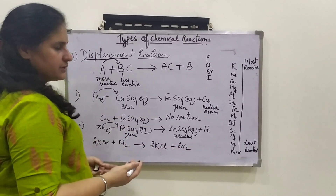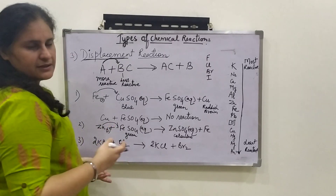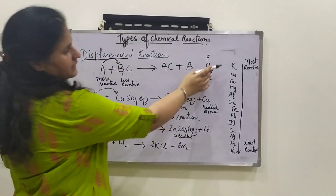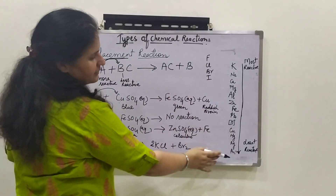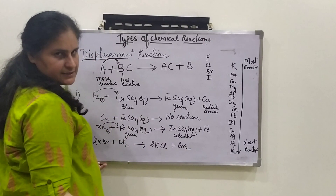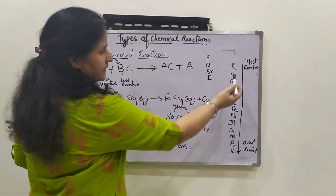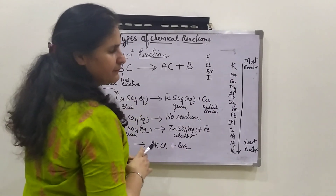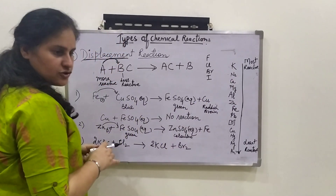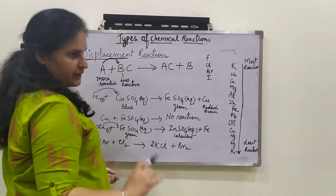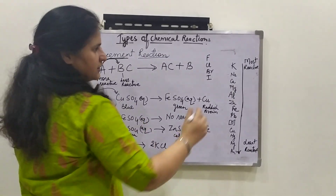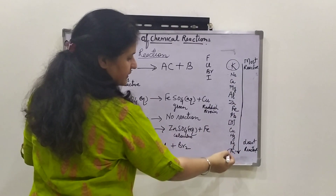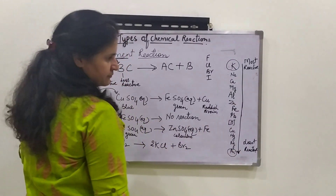Now how do you conclude which metal is going to take the place of another? For that you need to remember the reactivity series of metals. In the reactivity series of metals, metals are arranged according to their decreasing reactivity. The most reactive is at the top and the least reactive is at the bottom.